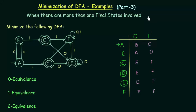In the previous two lectures, we have seen two examples of minimizing DFAs. In this lecture we will be seeing another example of minimization of DFA when there are more than one final state involved. The previous examples we solved had only one final state, but here we will see how to minimize a DFA with more than one final state. So let's see how we can do this — our task is to minimize the following DFA.